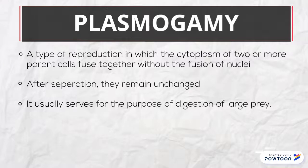Plasmogamy is a type of reproduction in which the cytoplasm of two or more parents fuses together, resulting in fission of nuclei. After separation, they remain unchanged. It usually serves for the purpose of digestion of large food grains.